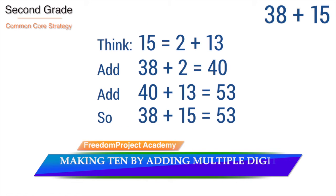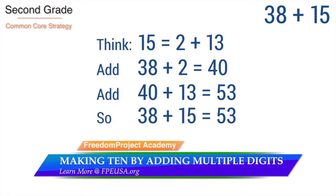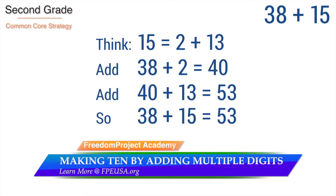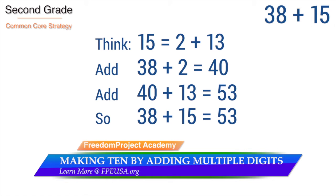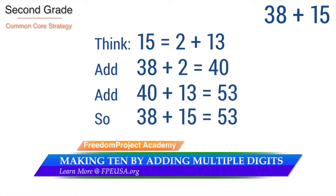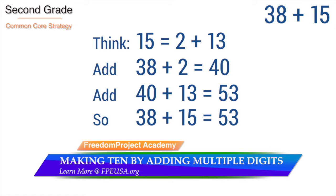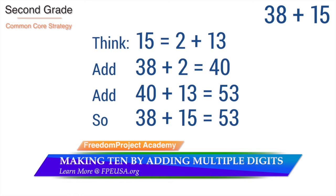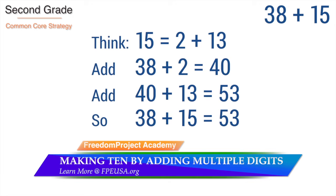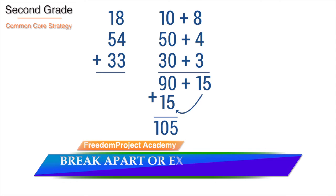In the second grade, students use the making 10 strategy to add multiple digits. In this example, the 15 must be decomposed to 2 and 3. This is developmentally inappropriate and makes the simplistic addition of 38 and 15 abstract and complex.